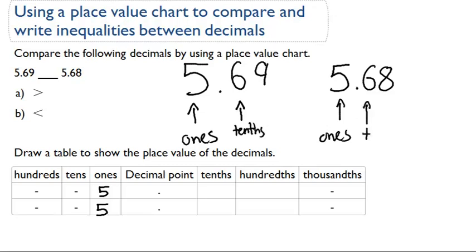For both numbers, again, the digit is the same. It's a six. There's a six in the tenths place for both numbers. So then again, we move on.